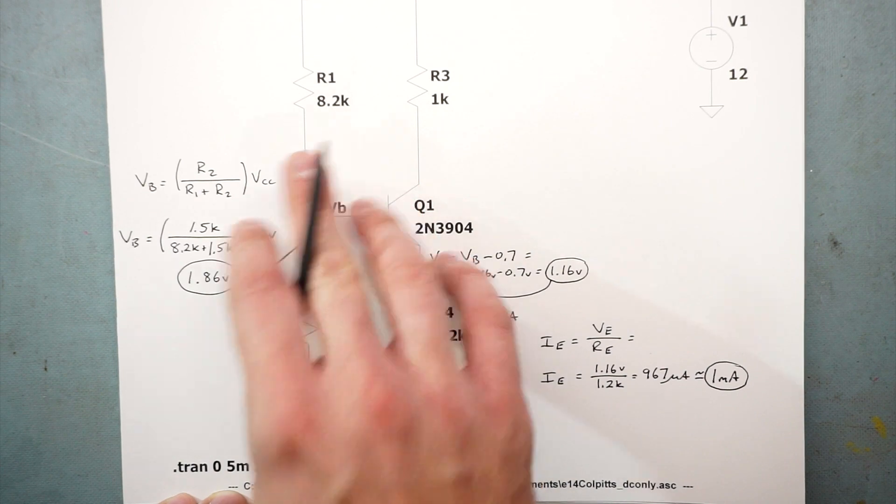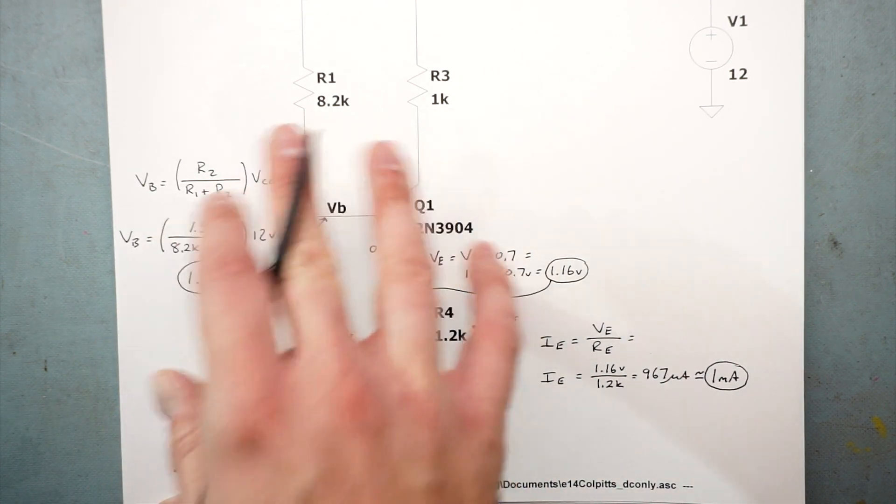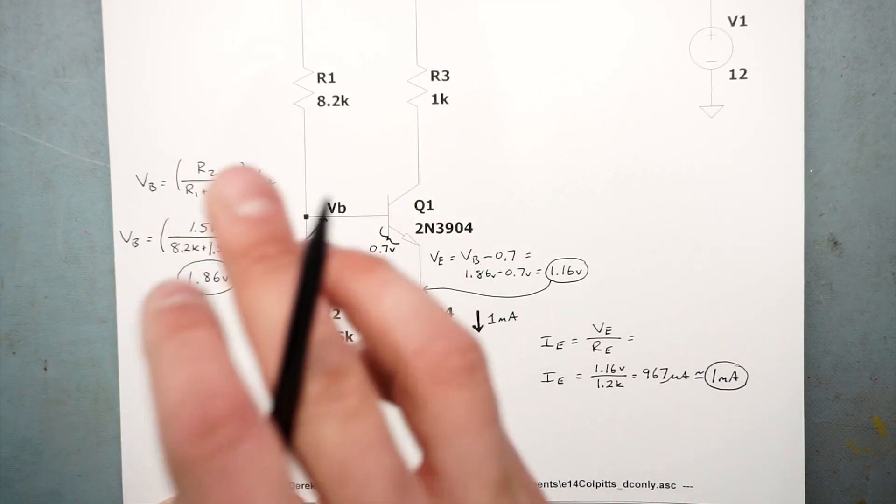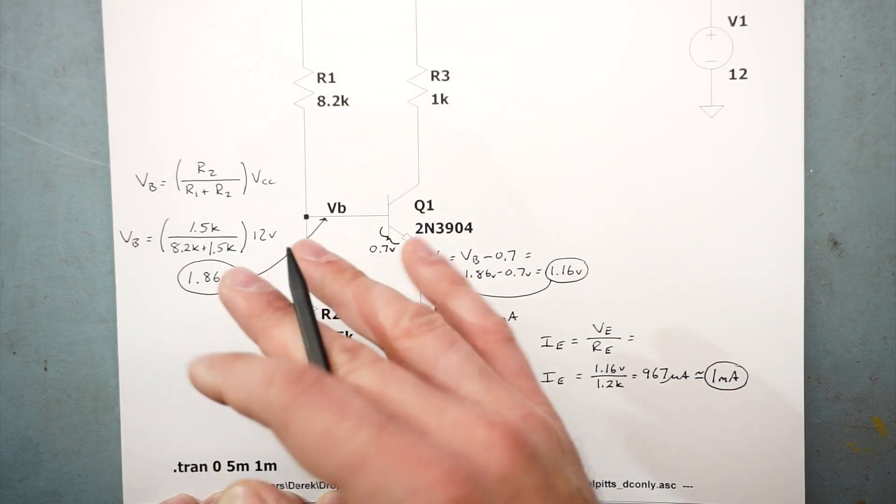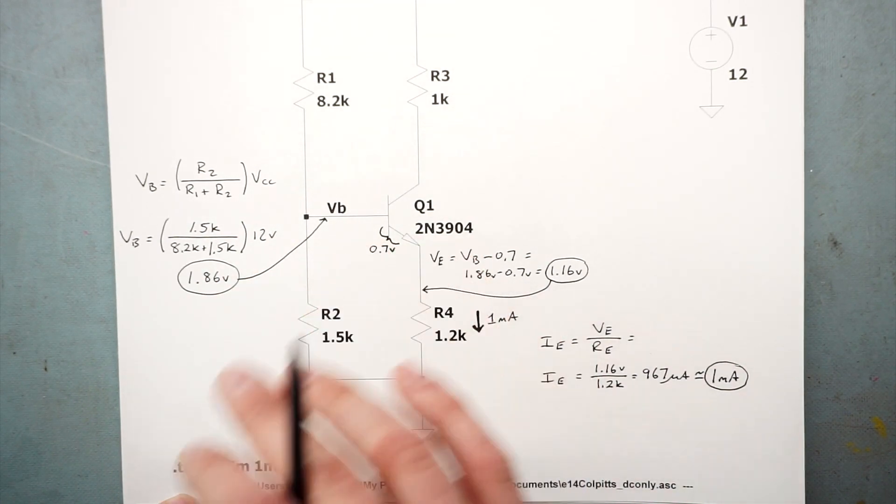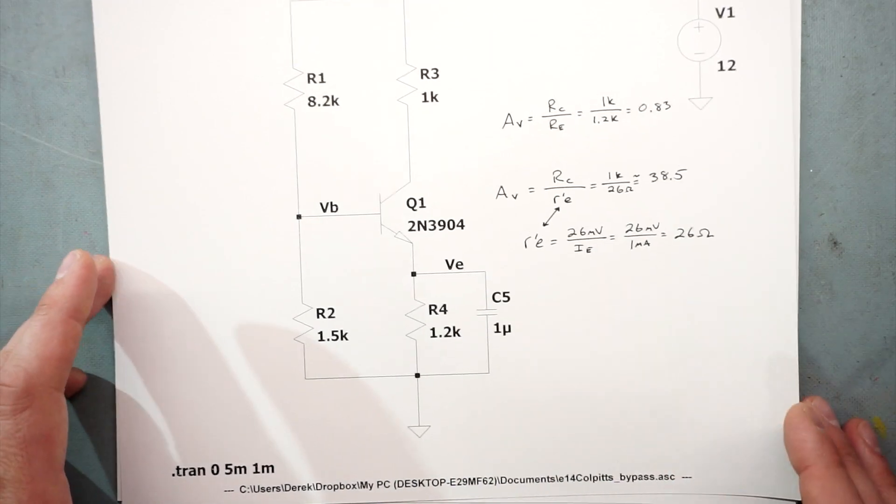So that sets up the bias conditions, the DC quiescent operating point under DC. It's not exactly in the center of the transistor's load line, but it's good enough for the oscillator that we're building today.